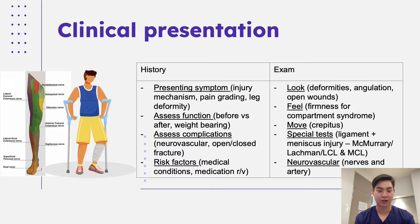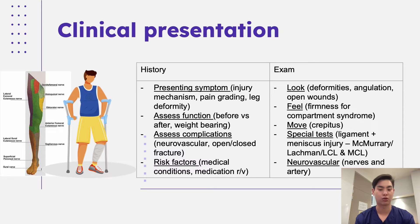With many fractures, we want to assess the different complications — especially acute complications such as neurovascular compromise, compartment syndrome, or the possibility of infection from an open or closed fracture. We also look at risk factors that might have contributed, to prevent recurrence — whether that's underlying medical conditions or medications like steroids that can cause osteoporosis. When examining a patient, we break it down into look, feel, move, special tests, and neurovascular assessment.